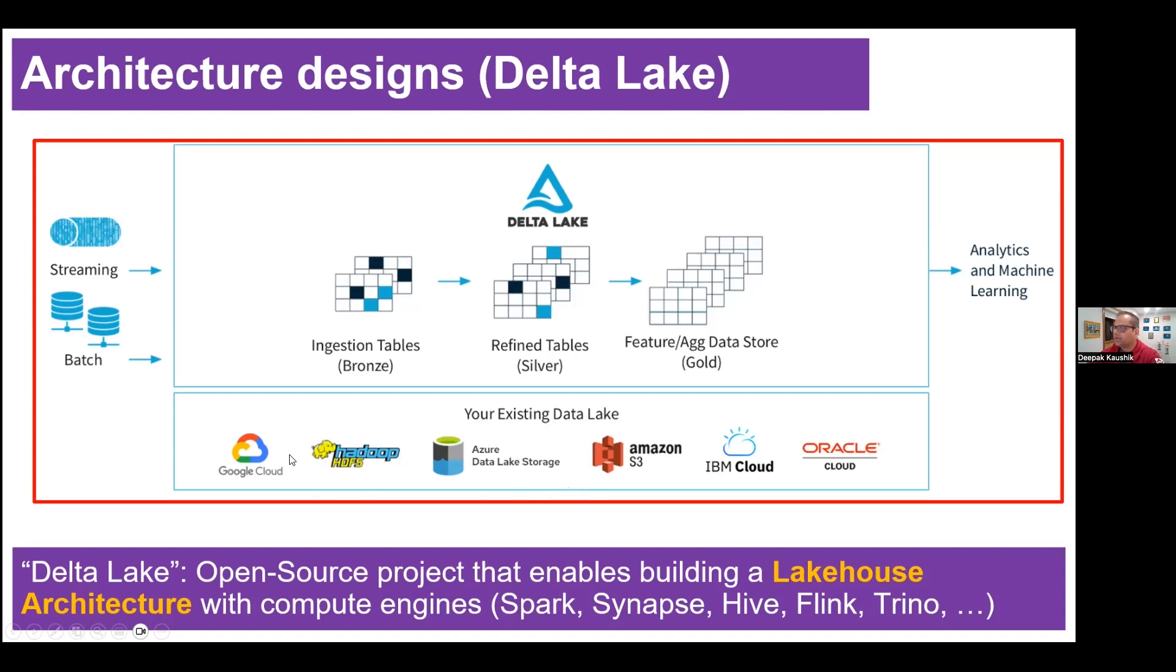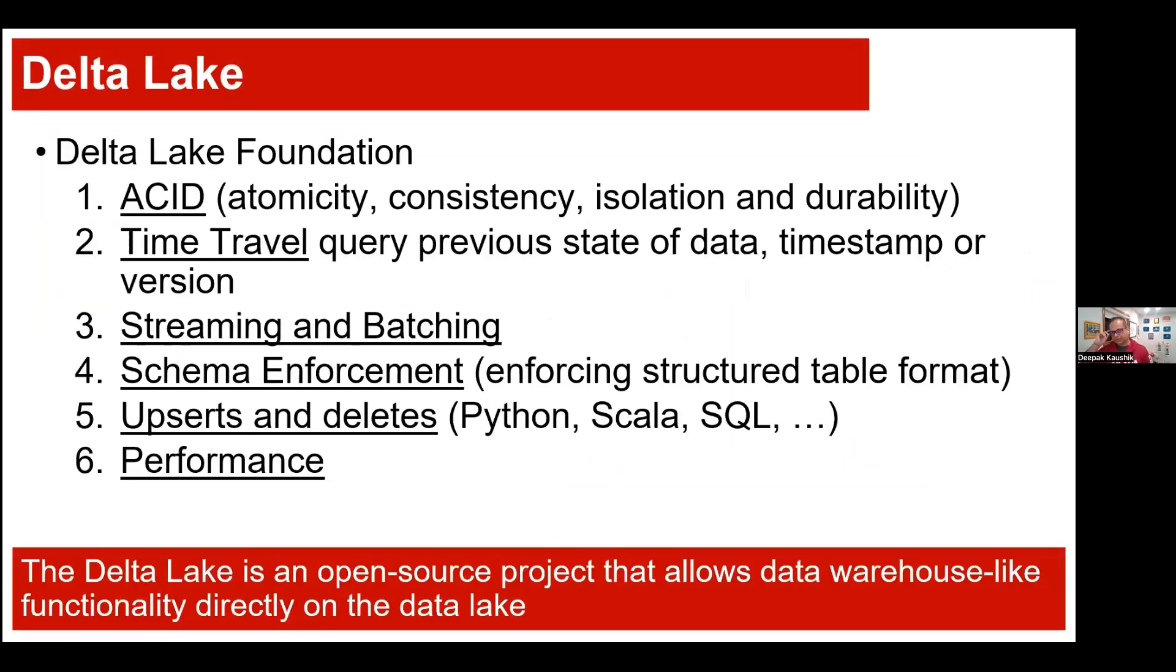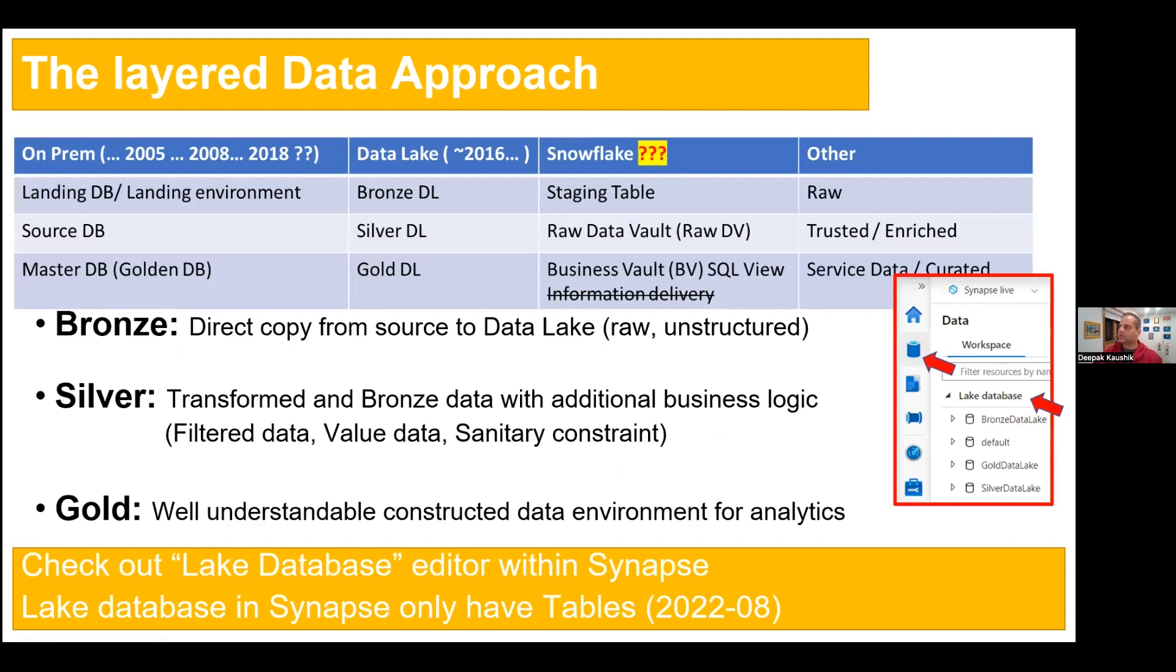But take a look over here. Delta Lake is sitting over the data lake. So basically all the storage is on the data lake, which can be Google Cloud or ADLS Gen2 or Amazon or IBM or whatever is there. So Delta Lake is basically, if I have to define, Delta Lake is an open source project that enables building a lake house architecture with compute engine. So basically it is supported by Spark or Synapse or all those different services which we are going to discuss today. Delta Lake is the logical and our data lake is the physical where we have all the compute and storage power.